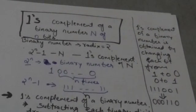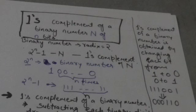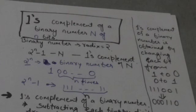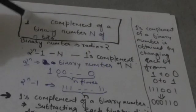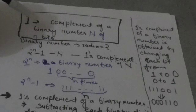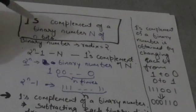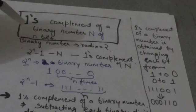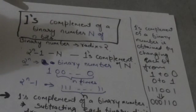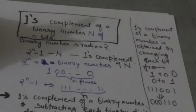Now in the binary number system the base or radix is 2, so the diminished radix complement is the 1's complement. Suppose there is a binary number N of n bits and we have to find its 1's complement. The diminished radix complement or r minus one's complement of binary numbers is the 1's complement, because binary numbers are of base or radix 2.